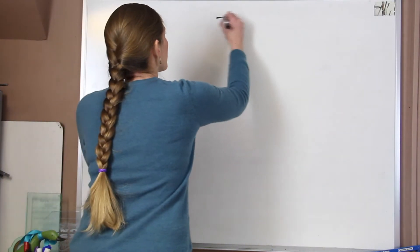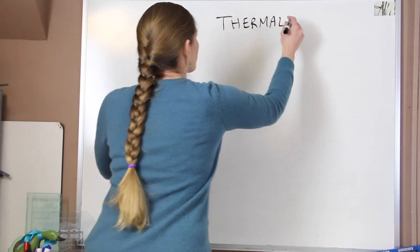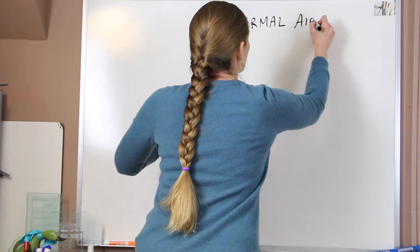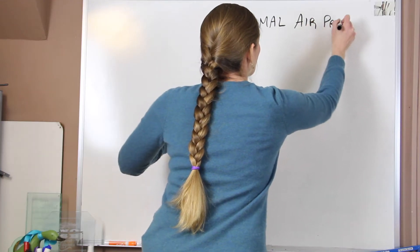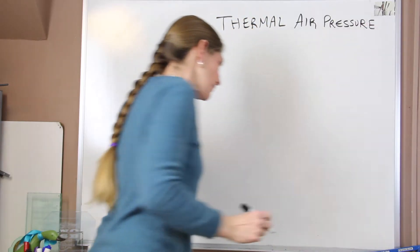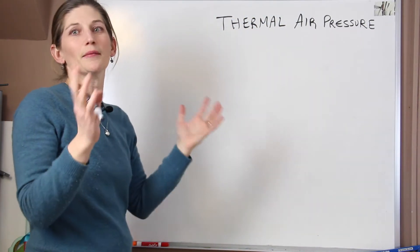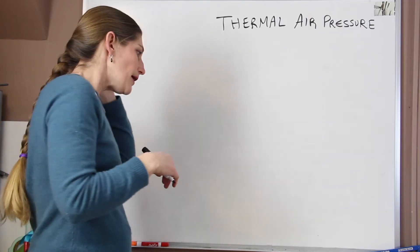The first one is thermal air pressure. Thermal air pressure occurs when we start to heat up or cool down the land.